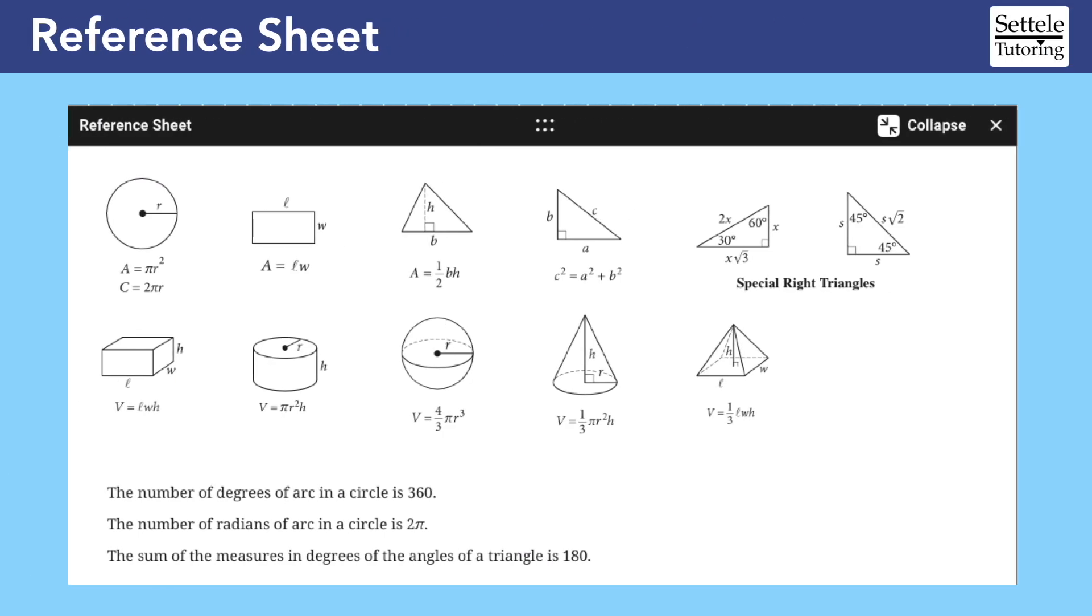For now, the main takeaway from this lesson should be that a lot of geometry formulas are given to you on the SAT. The most important strategy for geometry questions is to remember that the reference sheet exists. Too many people get easy questions wrong because they don't remember a key formula and never think to check the reference sheet.